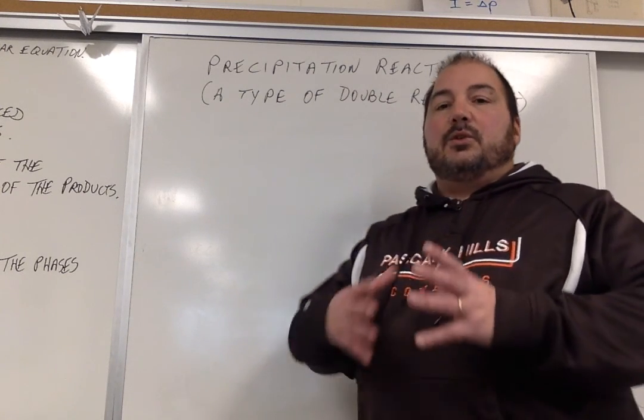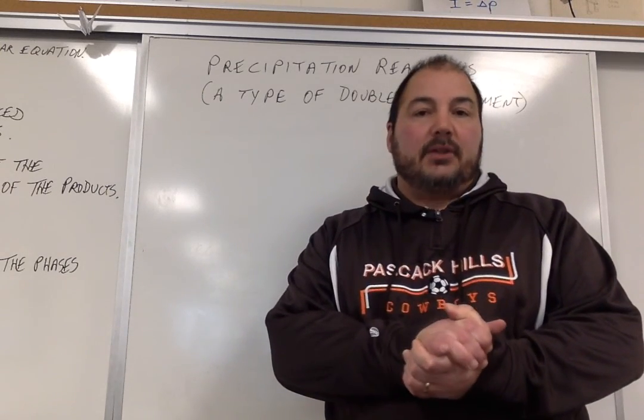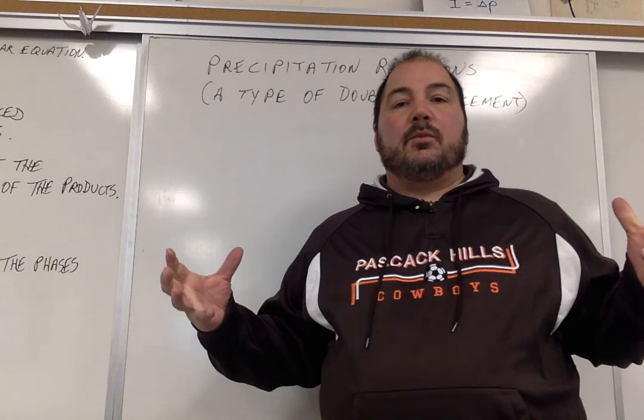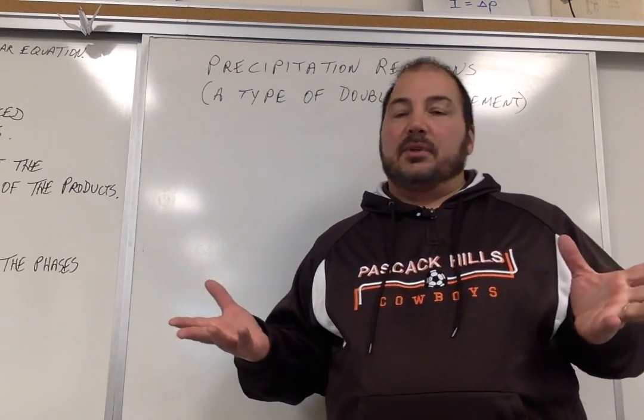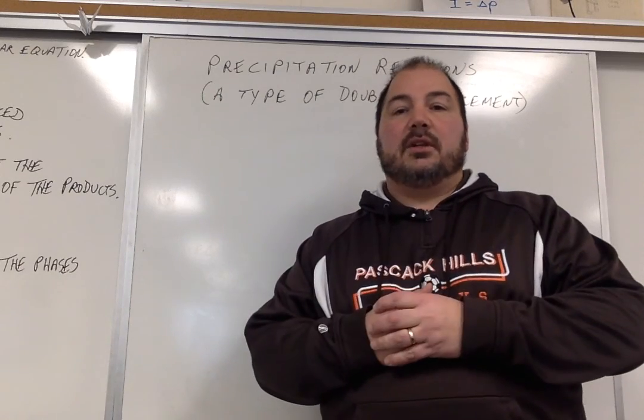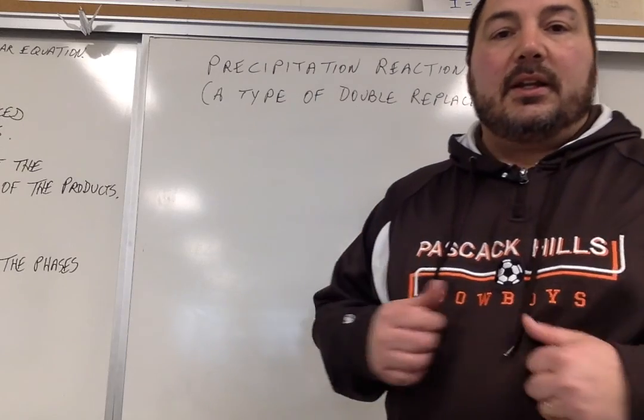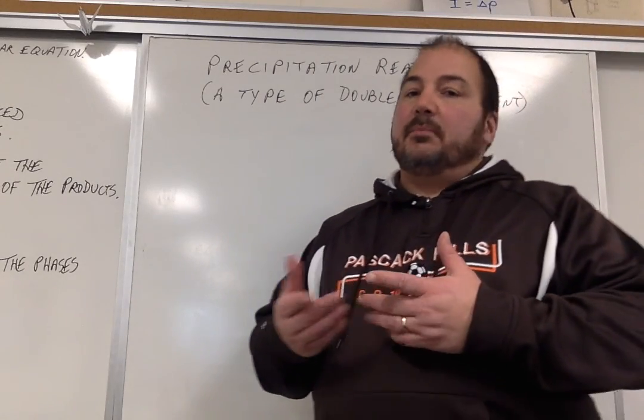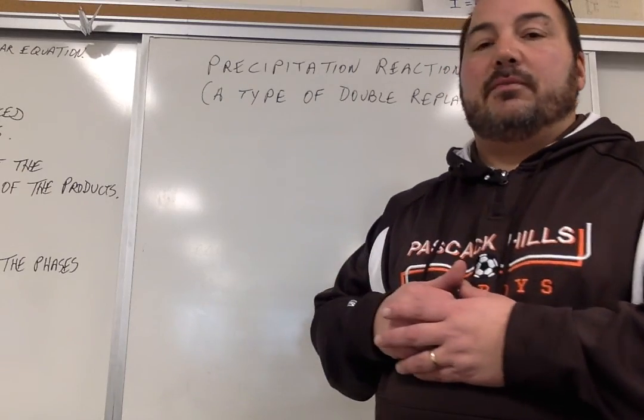What we're going to do is in two steps. First, we're going to talk about something called the complete molecular equation. The equations that we've looked at so far have always been complete molecular. It's really just writing out the equation as far as anything we've done so far. Then we're going to add another layer to that and talk about making it a net ionic equation. Let's get through the first part first, though.